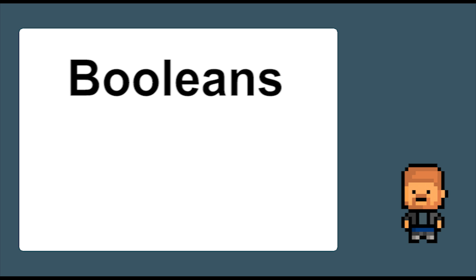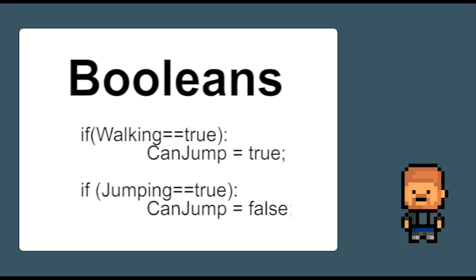You can also have booleans. These are variables that can only be true or false. Imagine we are playing a game and the program checks the following two conditionals: if walking is equal to true, can_jump equals true; if jumping is equal to true, can_jump equals false. This would allow a character to jump when walking but prevent it from jumping again while it is in the air. Booleans are very useful for variables that can only have two states — true or false — and they have the added advantage of taking up a small space in a computer's memory.